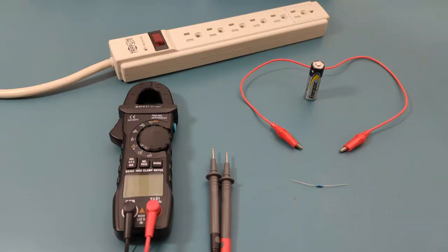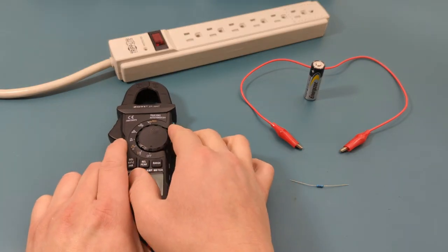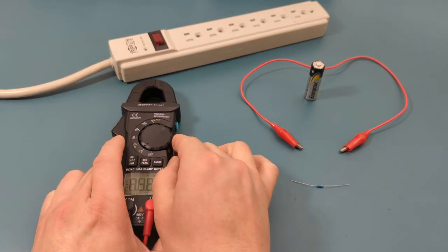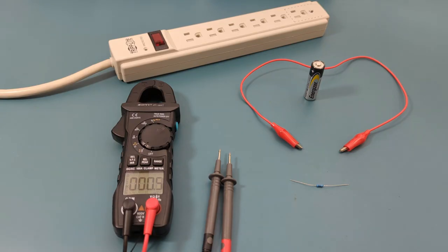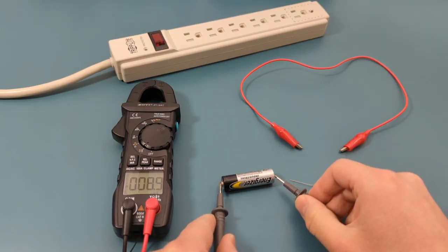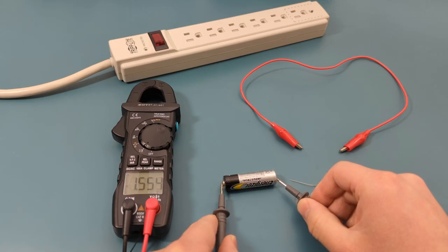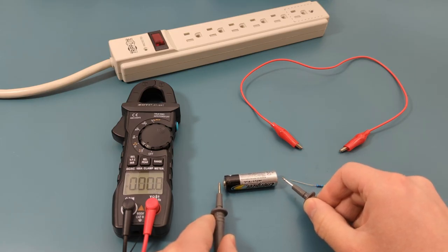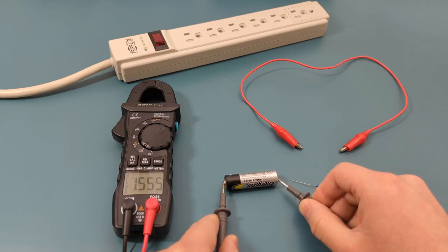The first test is to check the voltage of this AA battery. Turn the dial to the voltage setting. Since this battery is new, it should measure roughly 1.5 volts. The measurement is approximately 1.5 volts, which is a good sign.